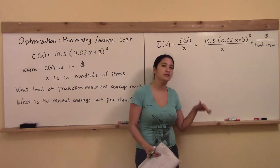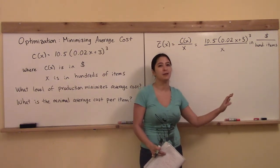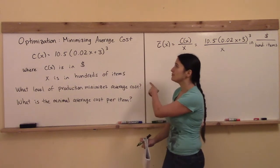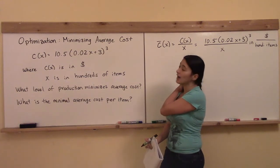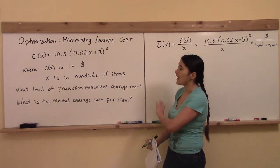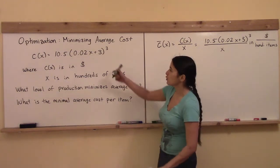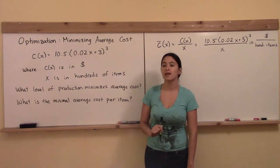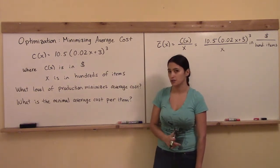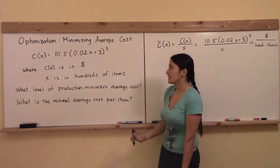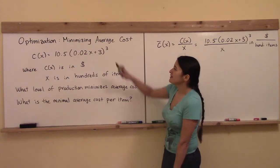And then it goes down and sometimes it goes back up again. So oftentimes when we form the average cost function by dividing total cost by x, we can find a minimum in the average cost function. That's why we're always making it a little bit harder like that.